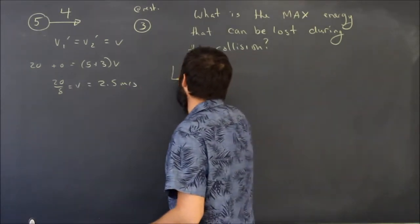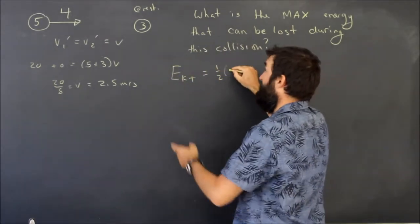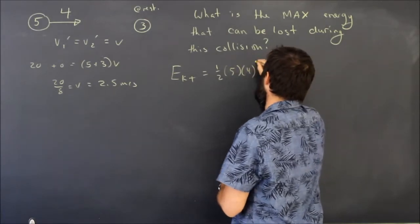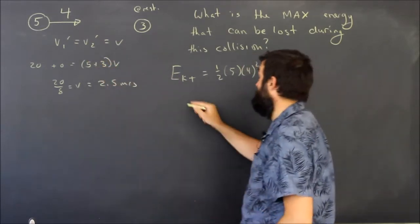So what's the kinetic energy that they have? Well, before the collision, the total kinetic energy was just a half 5 times 4 squared. That's 40 joules. That's the kinetic energy that the 5 kilogram object had before the collision.